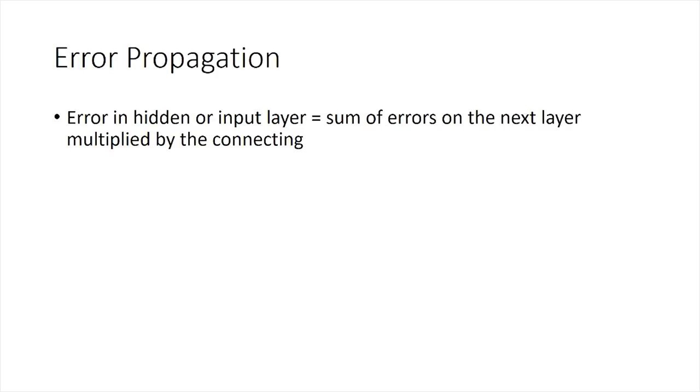So to get the error for our hidden layer neuron, you get the sum of all the errors on the next layer, multiplied by the weight connecting them.